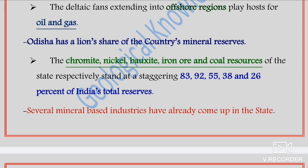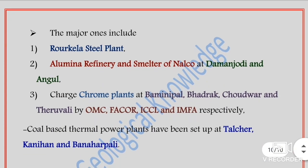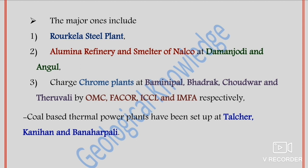Due to this extensive deposition and distribution of mineral reserves, several mineral-based industries have been established in the state. Major ones include the Rourkela Steel Plant, the aluminum refinery and smelter of NALCO (National Aluminium Company), the charge chrome plants at Baula or Sukinda, and coal-based thermal plants set up at Talcher, Kalyansinghpur, and Banharpali regions.